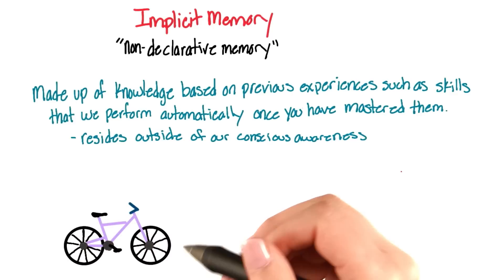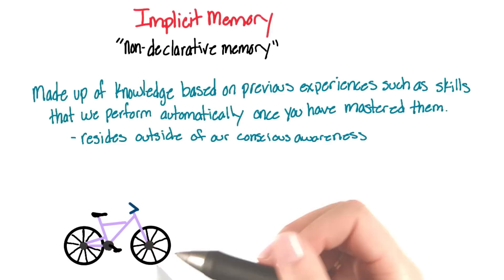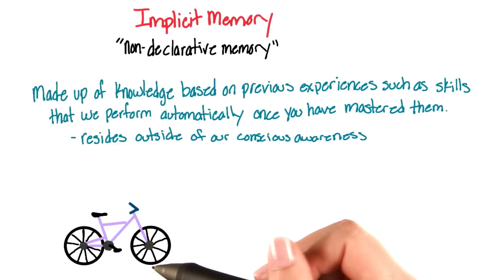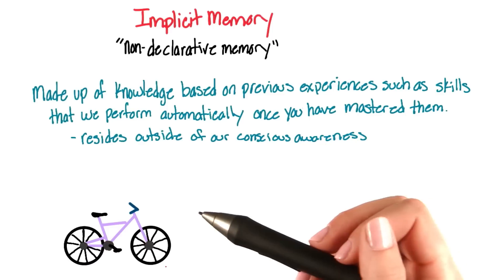For implicit memory, we know how to do something — for example, ride a bike — but it's difficult to describe how we can perform the skills we know how to do so well.